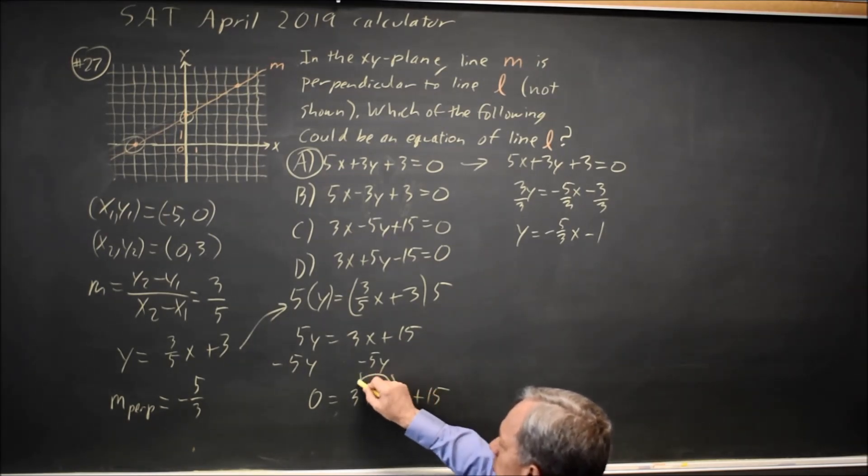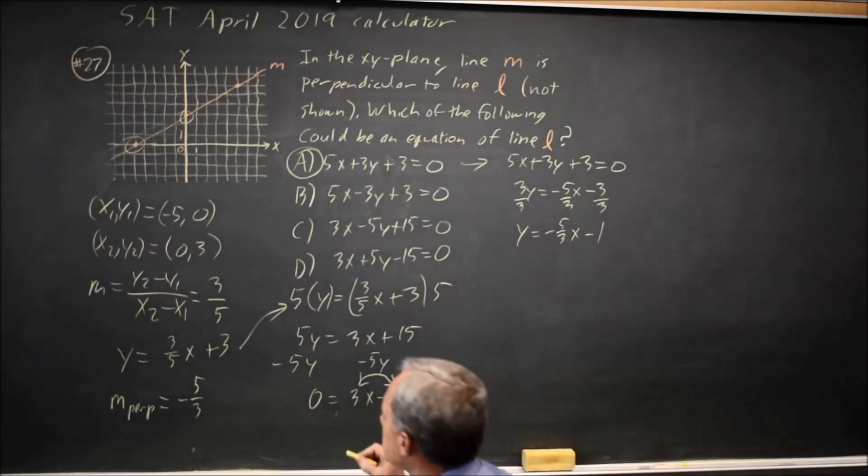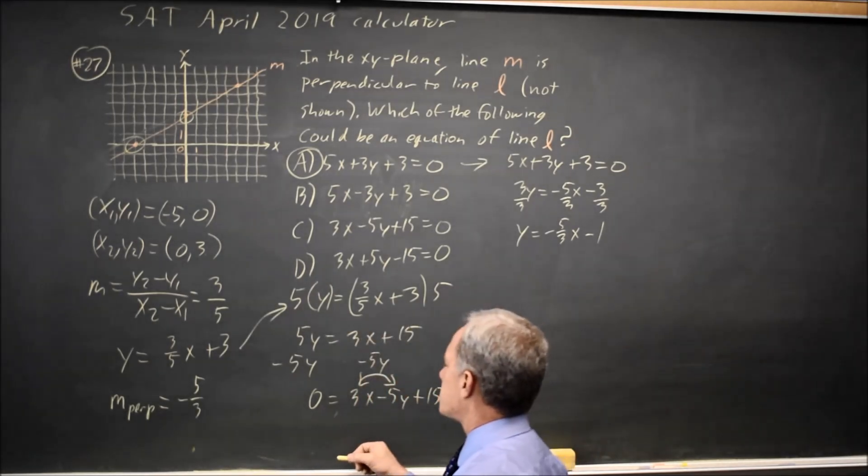To find a perpendicular in standard form, swap the x and y coefficients and then flip the sign on one of them.